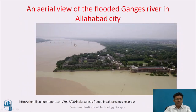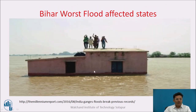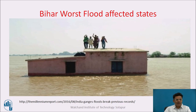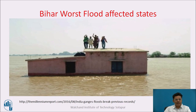This is an aerial view of the flooded Ganges river in Allahabad city. Here we observe a picture from Bihar, which is the worst flood-affected state of India. Whenever the Ganga and its tributaries are flooded, water spreads on both banks of the river and large areas of fields go under water. This tells us that we should study, understand, and analyze floods, which influence human settlements in many ways.